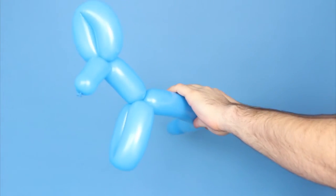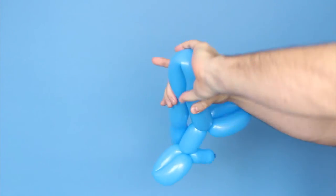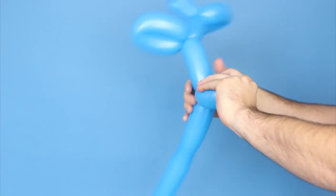Following that, we're going to make the hind legs. Again, grab the balloon about 10 inches lower and then twist.